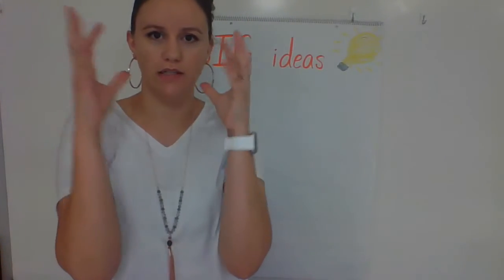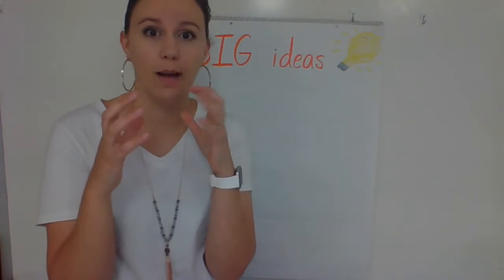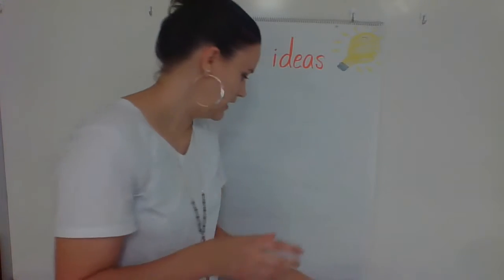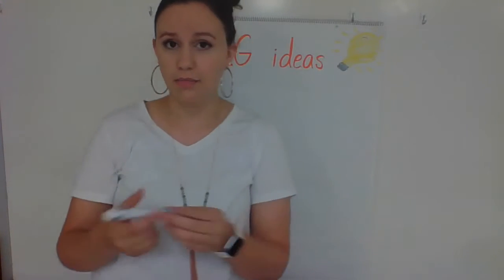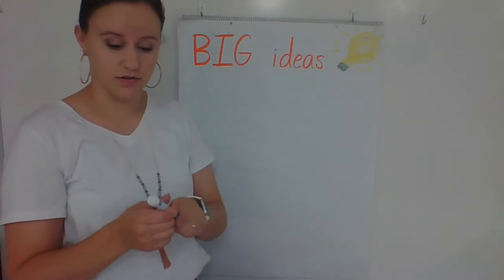But maybe you write about a small idea. Maybe you write about one of the rides, something awesome that happened on one of the rides, or just one of the rides, how much fun it is. So, when you write big ideas, you have to plan your writing, so you need to choose a big idea first.